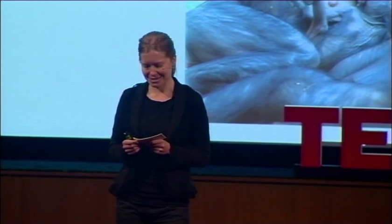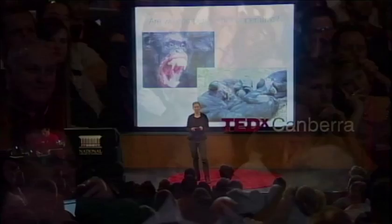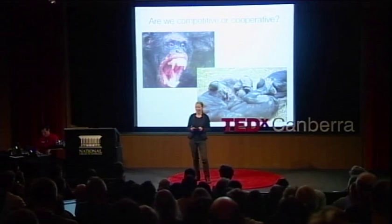Eleanor Ostrom won the Nobel Prize for her work looking at why so many commons don't actually end in tragedy. Her research showed that sometimes, when you put a bunch of people together with a scarce resource, they work out ways of using it wisely and making it last. Somebody should tell the Murray-Darling Basin Authority. It's kindergarten, Sesame Street stuff — cooperation.